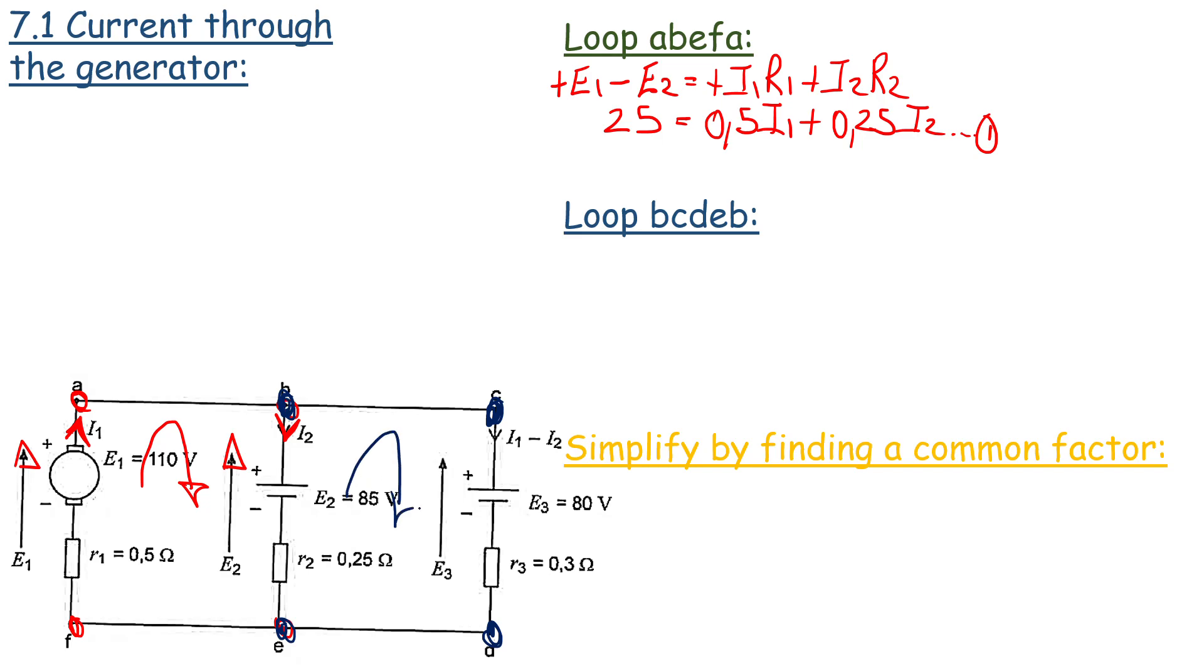Once again we look at a clockwise direction. So therefore E2 will be positive and E3 will be negative. Then you'll notice that I2 for our second loop is anti-clockwise and I3 is clockwise. So if we rewrite this we have E2 minus E3 and that is equal to minus I2 R2 plus I3 R3.